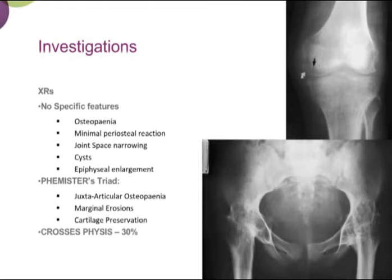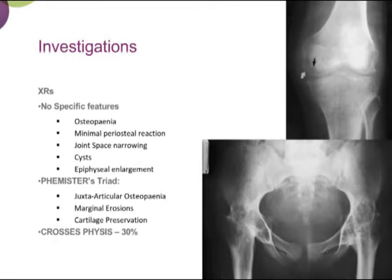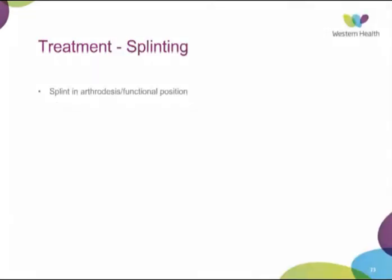In terms of orthopaedic imaging investigations, there are few specific features to distinguish TB on X-ray: osteopenia, periosteal reaction, joint space narrowing, cysts, and in children, epiphyseal enlargement. Phemister's triad consists of juxta-articular osteopenia, marginal erosions, and cartilage preservation. TB crosses the physis in about 30% of paediatric cases. Bone scanning is 88–96% sensitive, and MRI is a useful screening test to assess lesion activity and degree of fluid, though it is not diagnostic. The major differentials on bone scan and MRI include tumours.